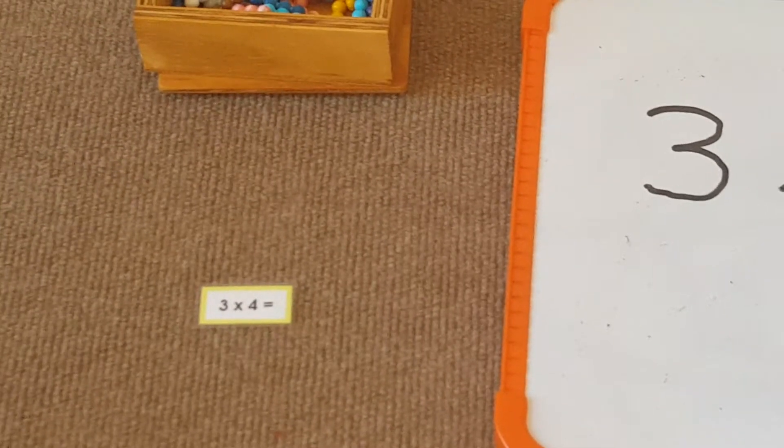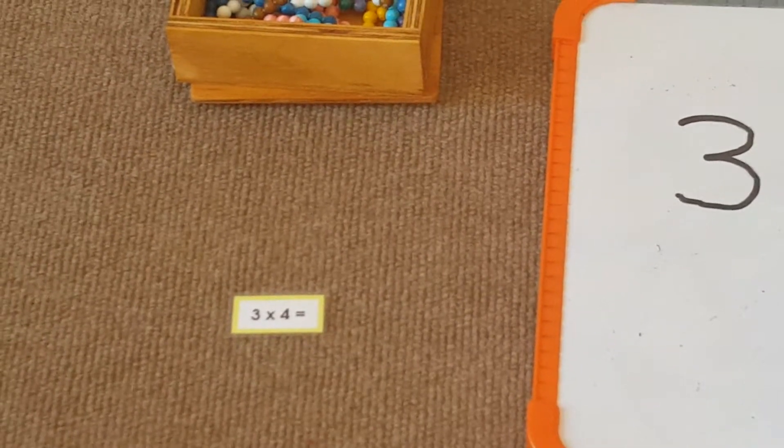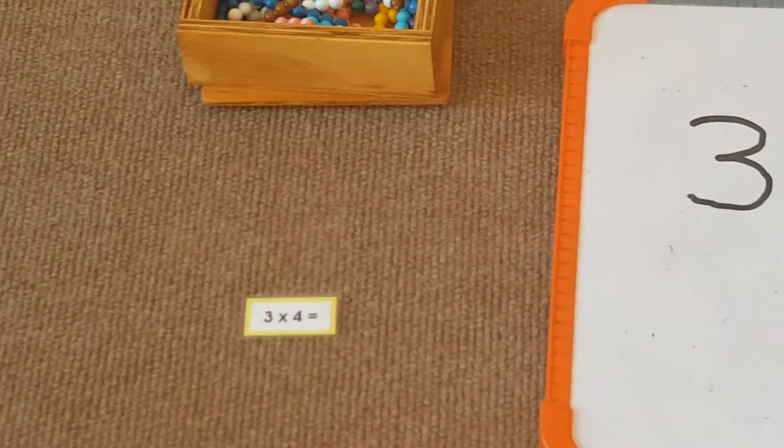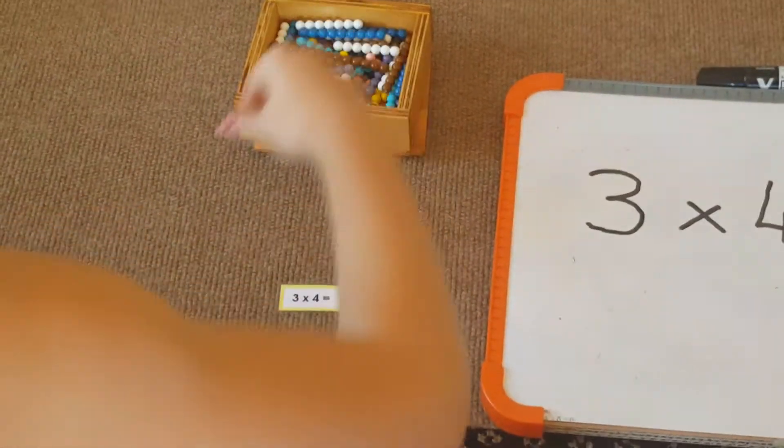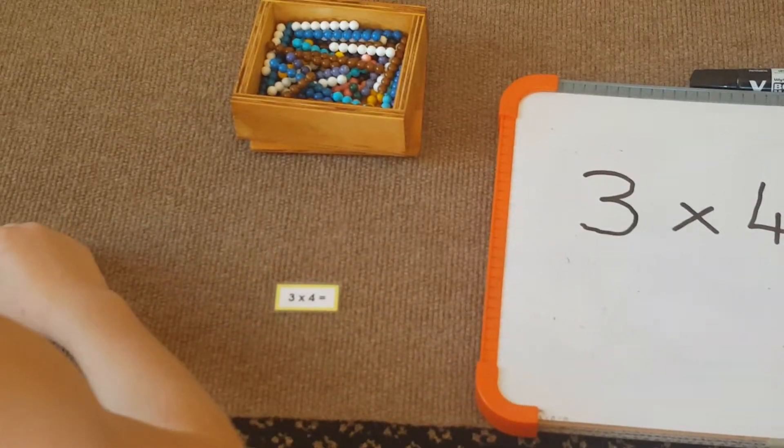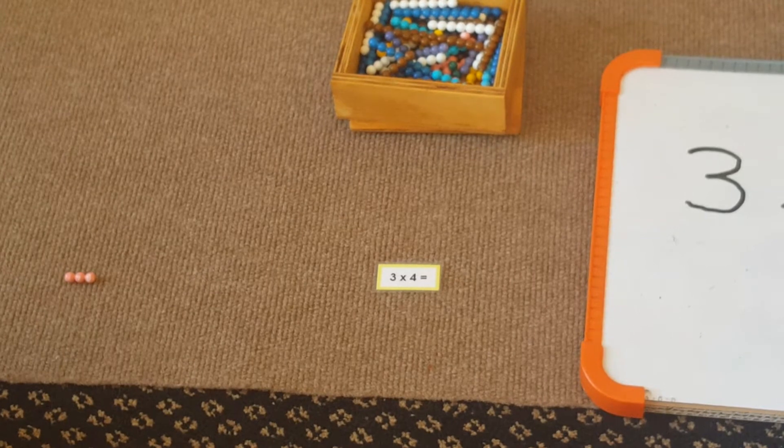Let's look at the next equation. Three times four. This means we need to look for the three bead bar and take it out four times.